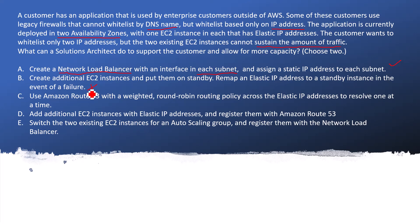Option C: Use Amazon Route 53 with a weighted round-robin routing policy across the elastic IP addresses to resolve one at a time. I will not go for Route 53 because it has already been mentioned that the legacy firewall cannot whitelist by the DNS name. So Route 53 cannot be useful to resolve this particular issue.